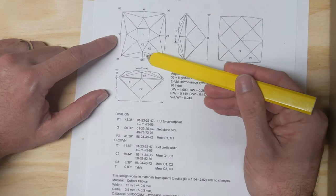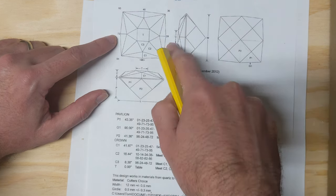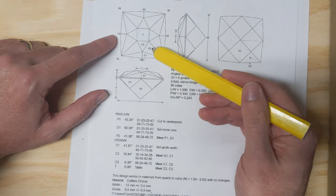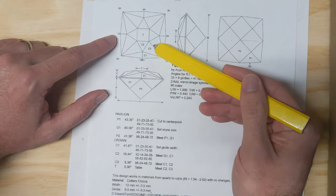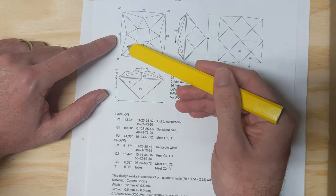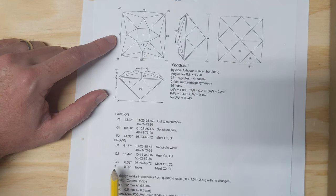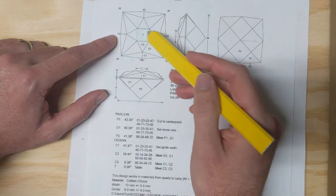You'd cut these facets, C1, all the way around. There's eight of those. C2 looks like there's eight of those as well. So you cut in these more elongated triangles there. C3 is these four at the top here, and then the table is the flat.